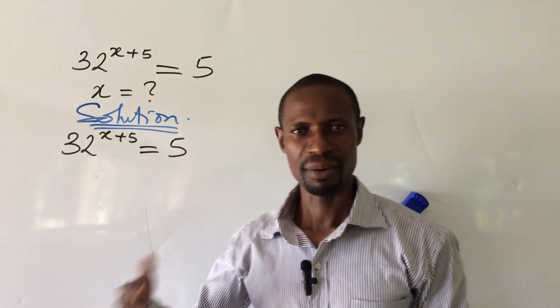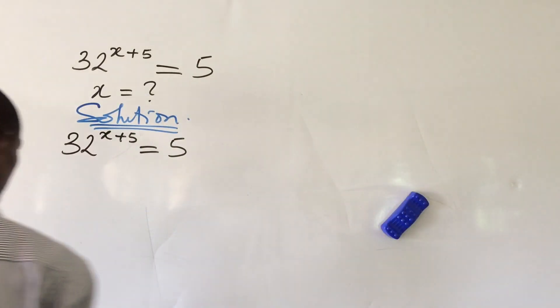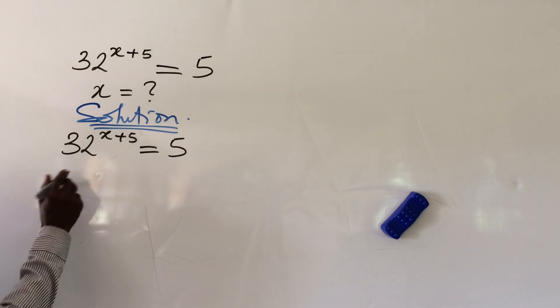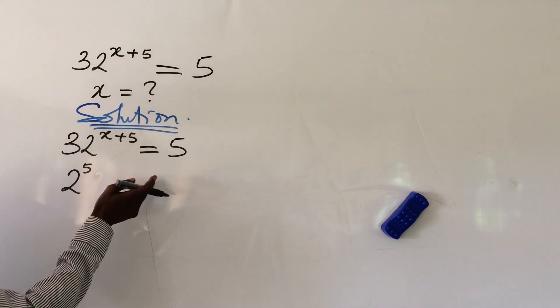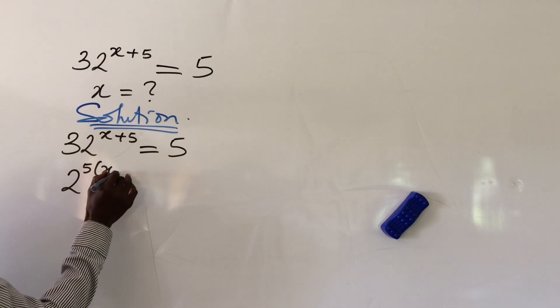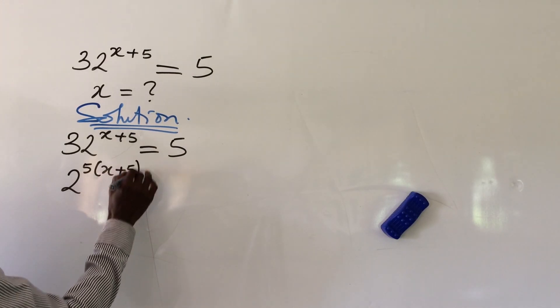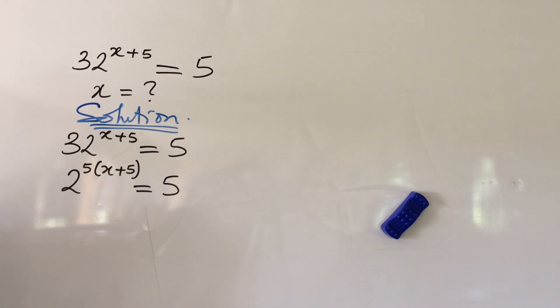If I put 2 here, raise it to the power of 5, that will give me 32. So let's go ahead and do that. So we can rewrite this 32 as 2 to the power of 5. At the exponent, we have an existing function already. So put it in bracket x plus 5 plus bracket equal to 5. Good.